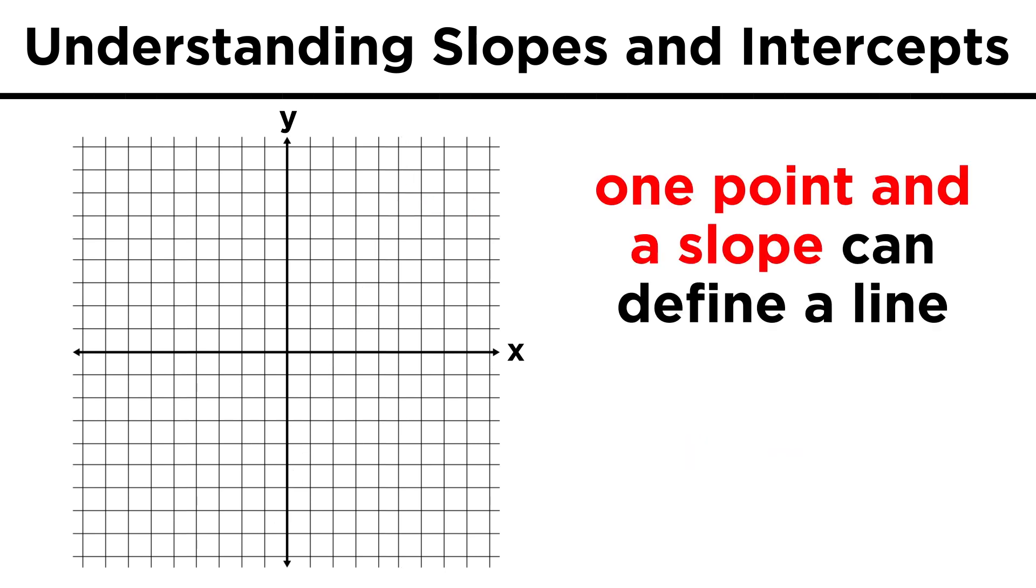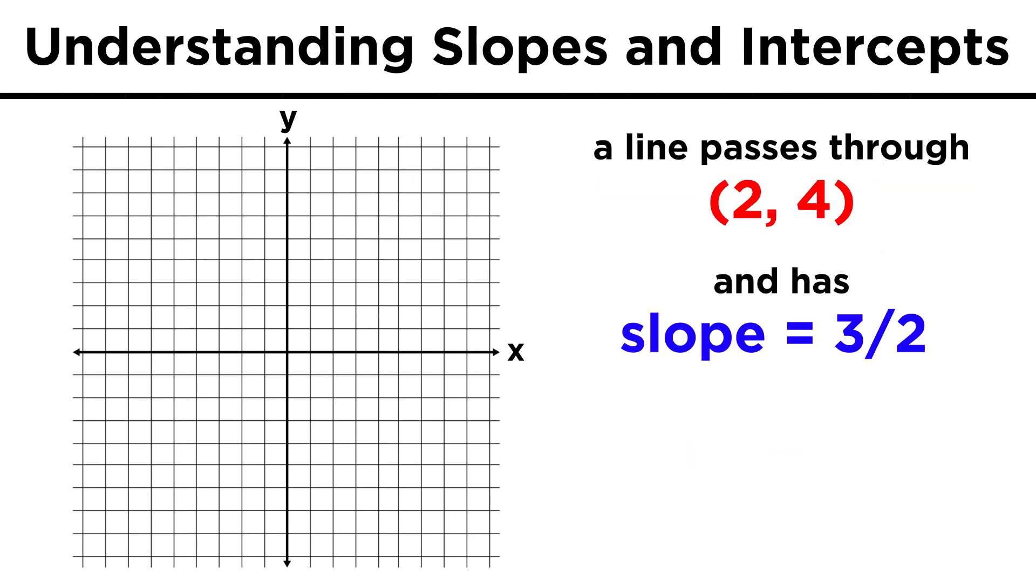Also one point and a slope can define a line. We could say that a line passes through two four and has a slope of three halves. To draw this line, we would just go to the point two four and start applying the slope. Up three over two. This could also be down three, two to the left, because negative three over negative two also equals three halves, and that's how the slope, which we can regard as the rate of change, makes sense regardless of which direction you travel.